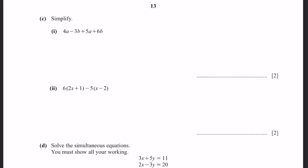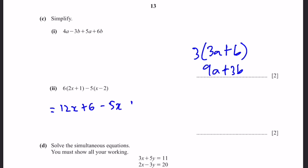Part C, simplify: (1) 4A − 3B + 5A + 6B = 9A + 3B, which can also be written as 3(3A + B). (2) 6(2x + 1) − 5(x − 2) = 12x + 6 − 5x + 10 = 7x + 16.